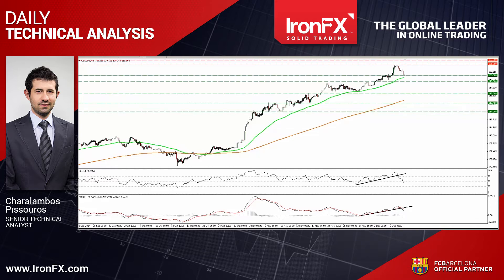Today I would like to talk about USDJPY, which declined on Monday after hitting resistance at 121.85, and about AUDUSD, which continued sliding, breaking below the 0.83 zone. Let's see the USDJPY pair first.